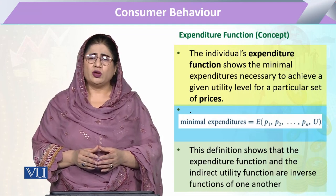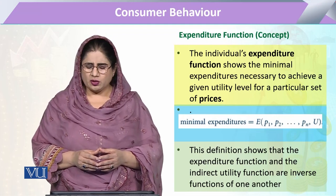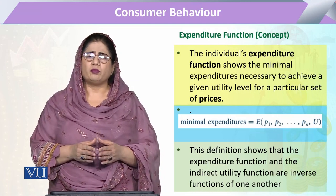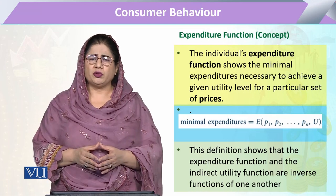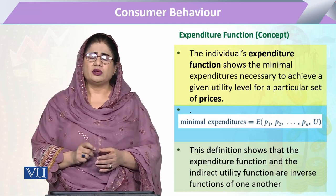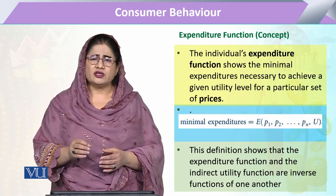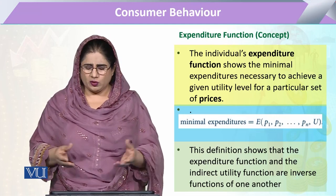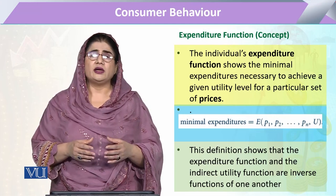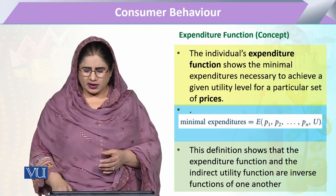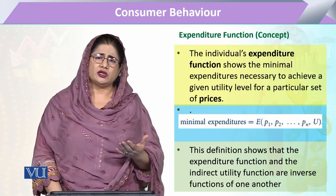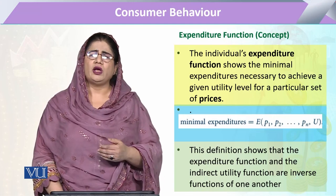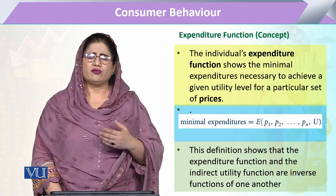So the expenditure function will be equal to the minimum expenditure, which depends upon the given level of prices, subject to the utility that is fixed for that consumer. This definition shows that the expenditure function is the inverse of the indirect utility function of the consumer — they are inverse functions of each other.